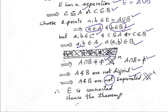We got a contradiction. We assumed E has a separation, and we derived a contradiction. Therefore E has to be connected — and that is what we had to prove. Hence the theorem. A very, very simple theorem.